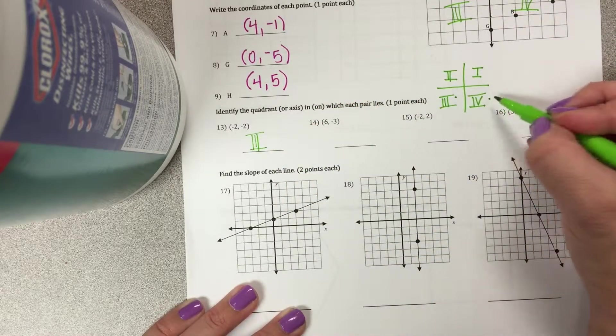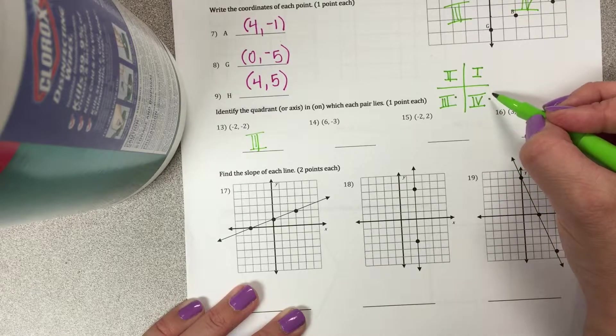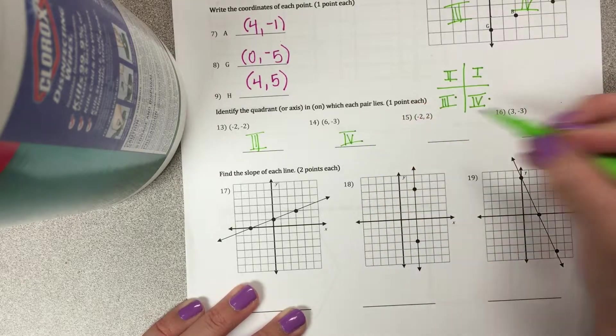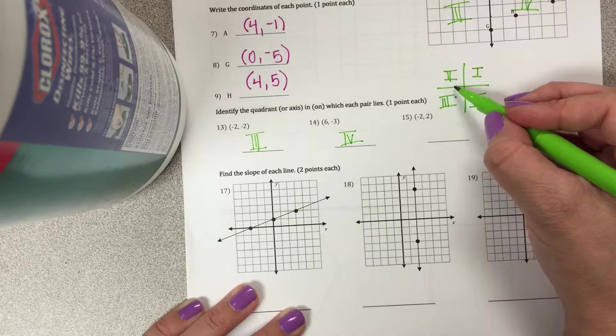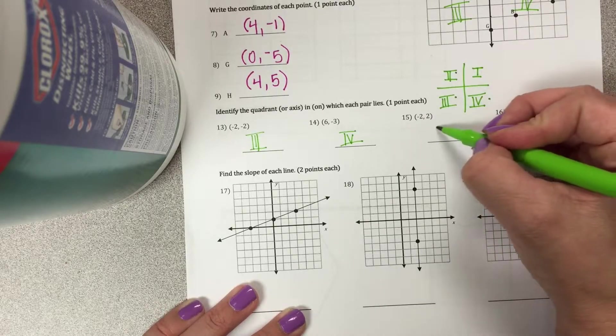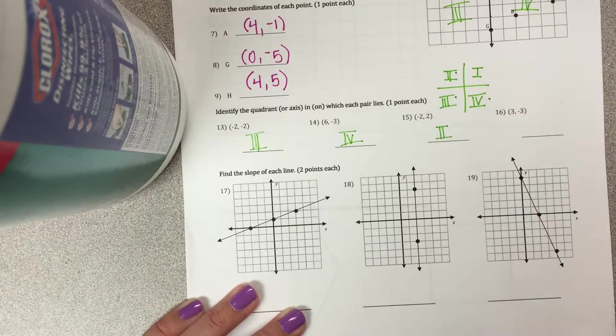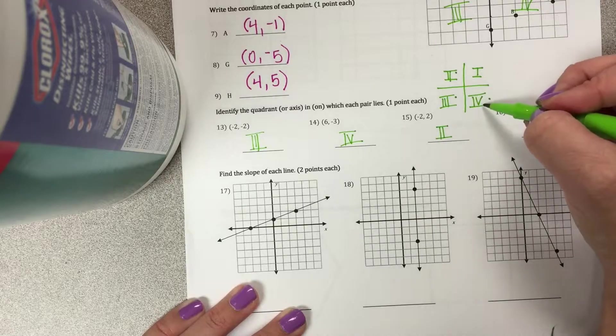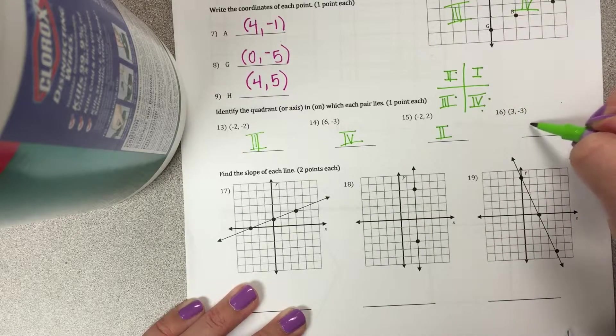Positive 6, negative 3, right? Over 6, down 3. That's going to be over here in quadrant 4. Negative 2 on the X, positive 2 on the Y is going to be in quadrant 2. And then 3, negative 3, down here again in quadrant 4.